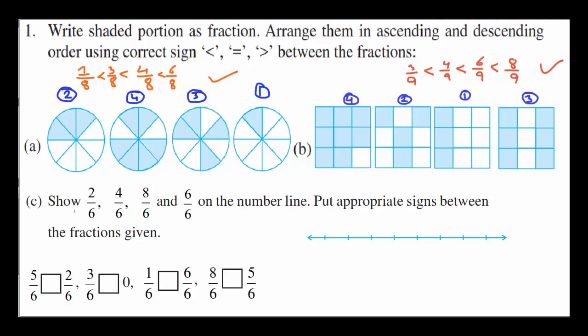We just have to define them. Show 2 over 6, 4 over 6, 8 over 6, 6 over 6 on number line. Number line is a representation of various numbers or fractions. So let's divide whole number into part of eight. Here we go.